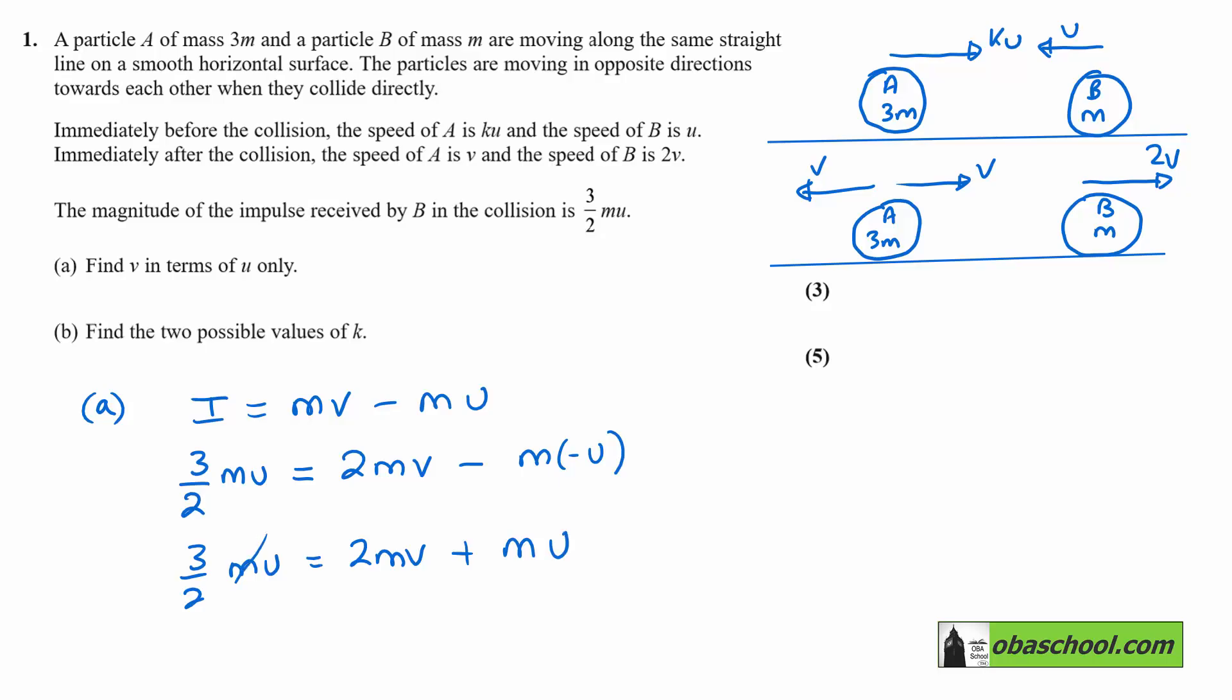We can cancel all the m's here. So we have 3/2 U equals 2V plus U. That gives us 2V equals 1/2 U—that's 3/2 U take away U. Therefore V equals 1/4 U or U/4.